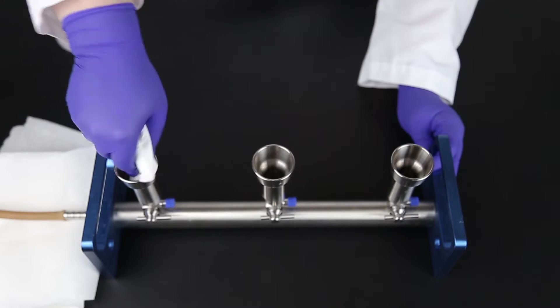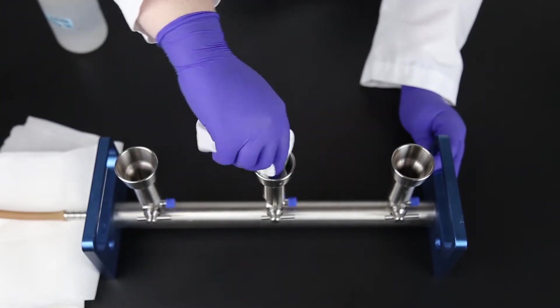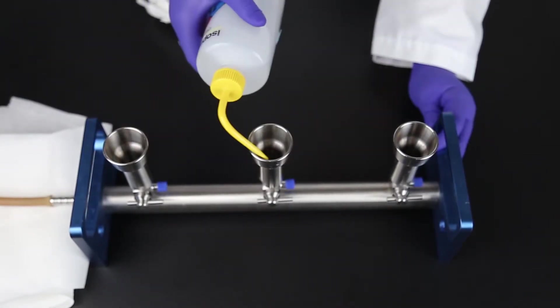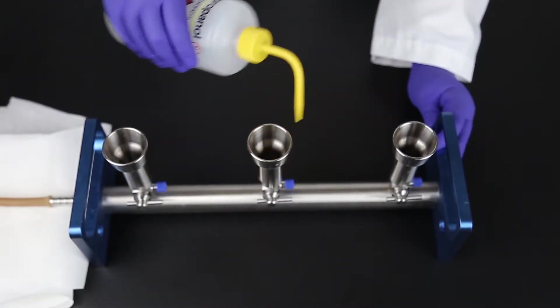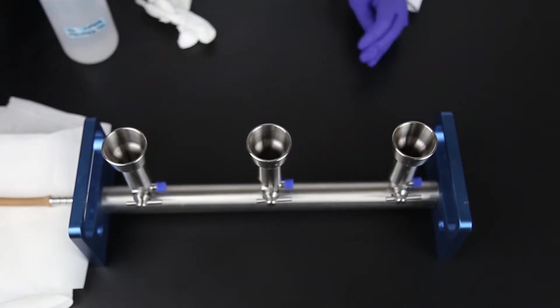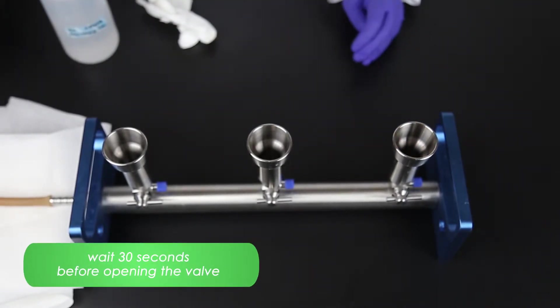If there's any buildup or debris in the manifold opening where the stopper sits, wipe it down with a paper towel. Then, add a disinfectant of 10% bleach, isopropanol, or other validated cleaning solution to each opening and allow it to sit for 30 seconds prior to opening the valves.